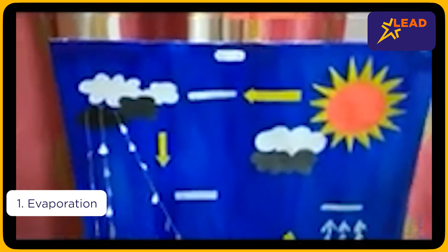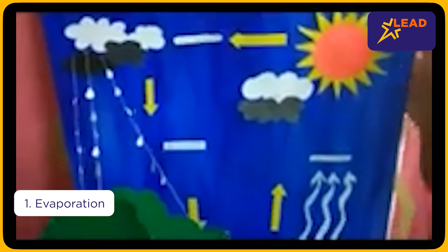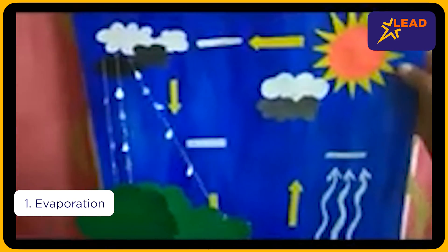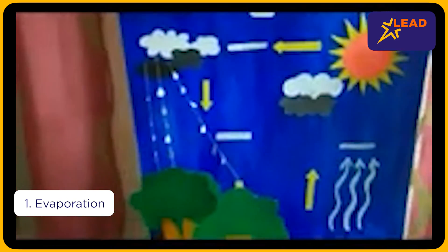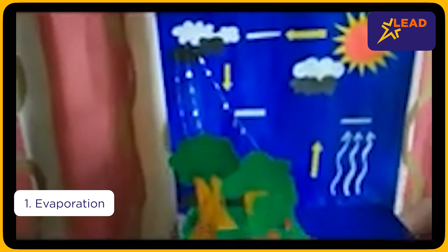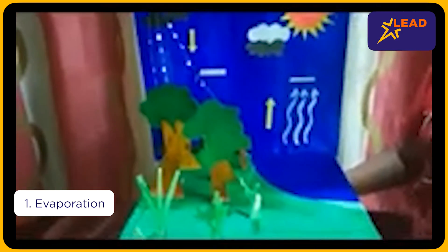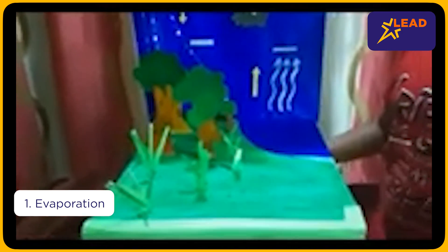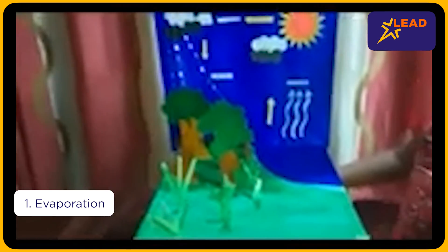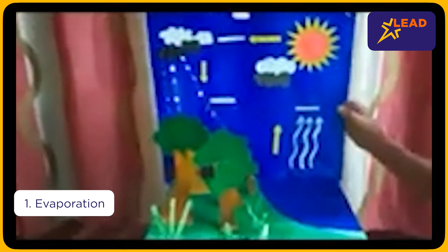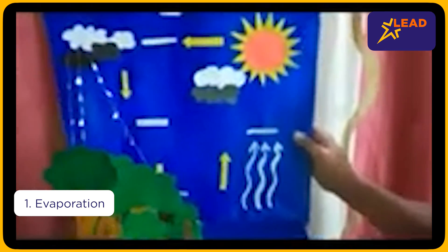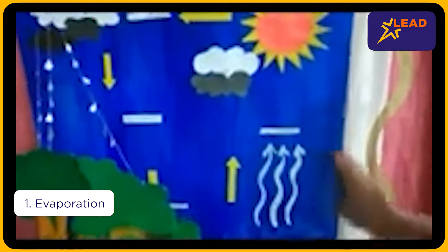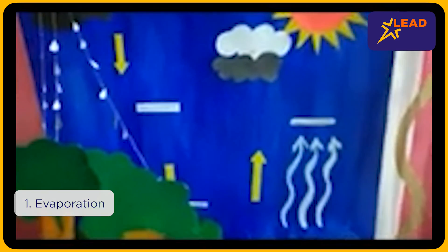The first stage is evaporation. When the sun heats up the ocean and rivers, the water turns into water vapor and rises up in the air. This process is known as evaporation and is the first process in the water cycle.